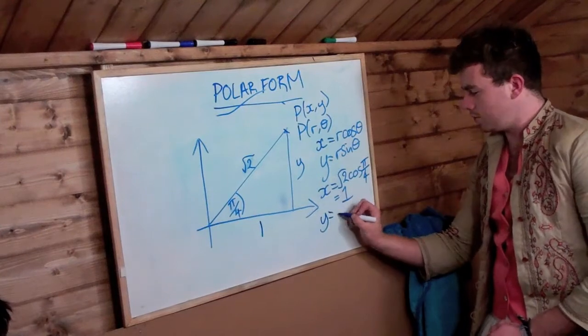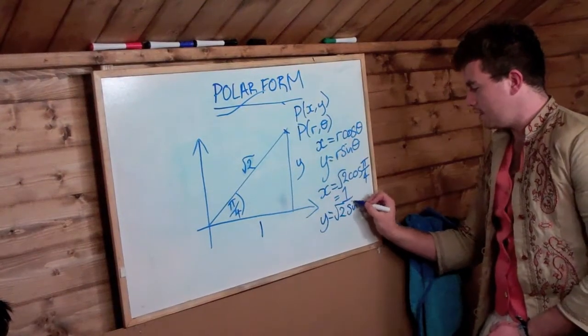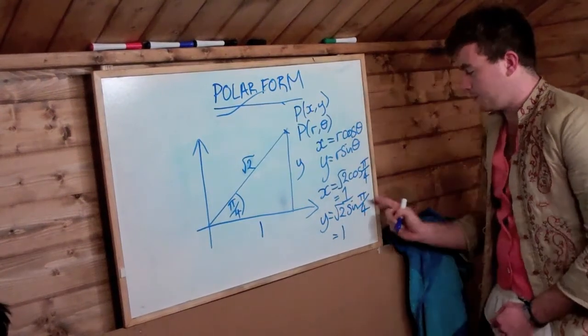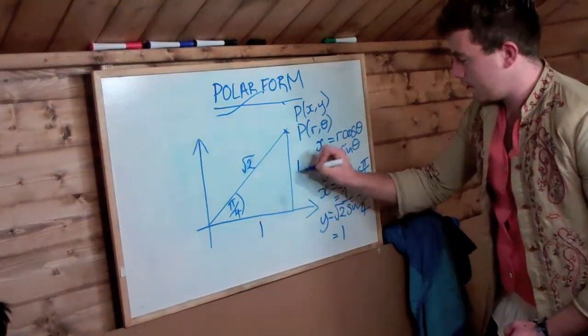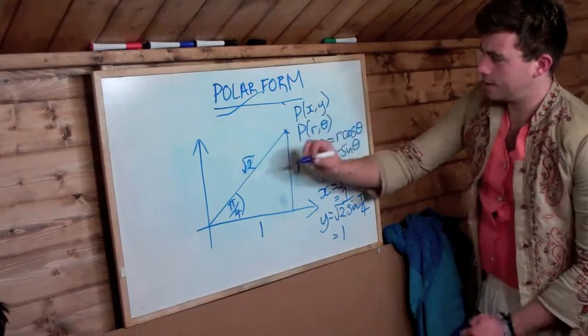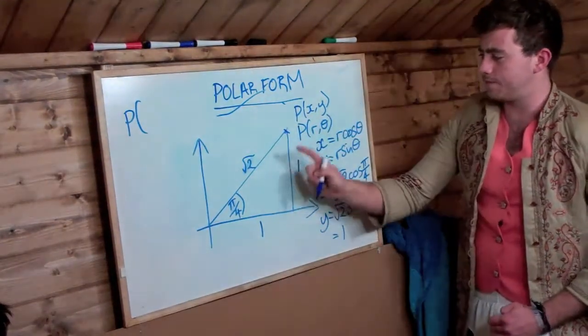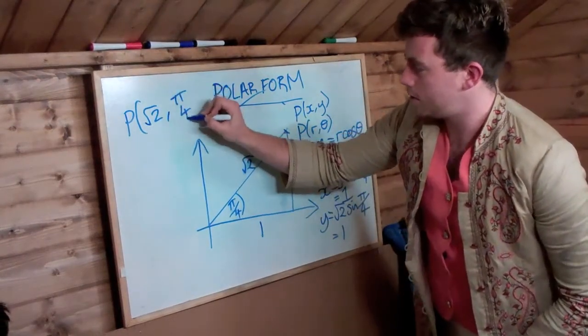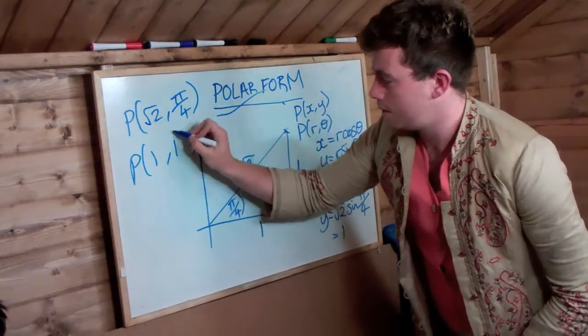We do the same for the y component. y is equal to root 2, which is r sine pi by 4, which is also equal to 1, as pi by 4 is theta. So here we have point P in polar coordinate system form is root 2 pi by 4. And in Cartesian form, it's 1, 1.